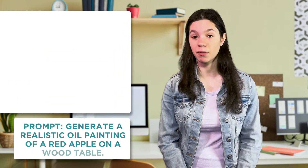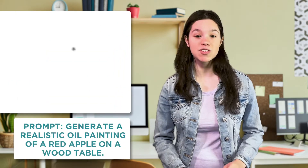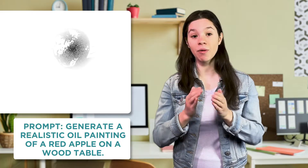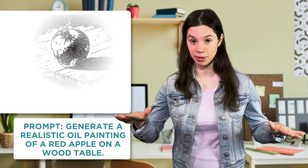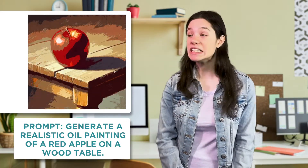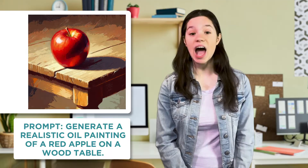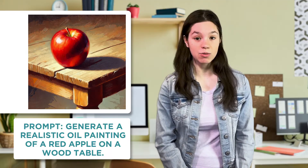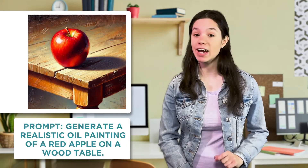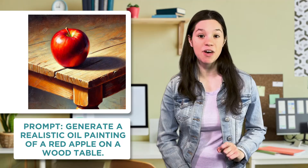Say we ask AI to generate an oil painting of an apple on a table. First, the faint shapes of the round apple and the flat table appear. Then colors emerge. Next come details, like highlights and shadows. This process creates a final image with the warmth and depth of a real painting.